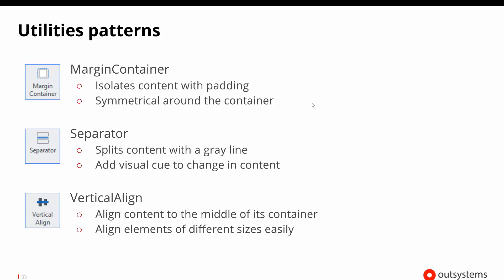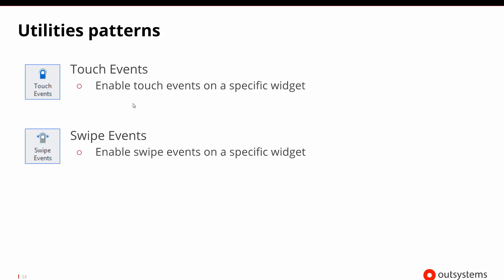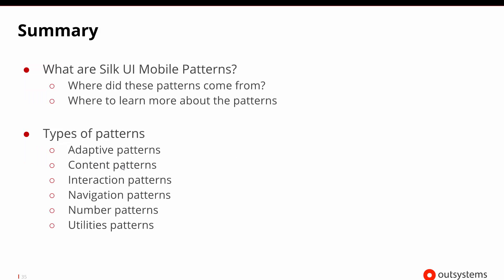Finally, the utility patterns. Occasionally when setting up different types of content, we want a margin around all areas so that components don't bump against each other or overlap. A margin container can help with that. A separator can separate two different sections. And for content of different sizes that needs to be aligned vertically, there's a vertical alignment option that finds the middle of the container and aligns elements to it. Two newer patterns are touch events — which enable specific touch interactions on a widget — and swipe events. Both are patterns more specific to touch-oriented devices than typical websites.